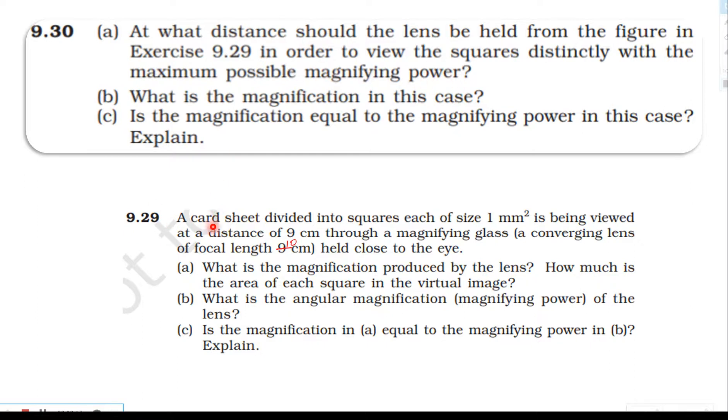Problem 9.29: A card sheet divided into squares is being viewed at a distance of 9 cm through a magnifying glass, a converging lens of focal length 10 cm held close to the eye.